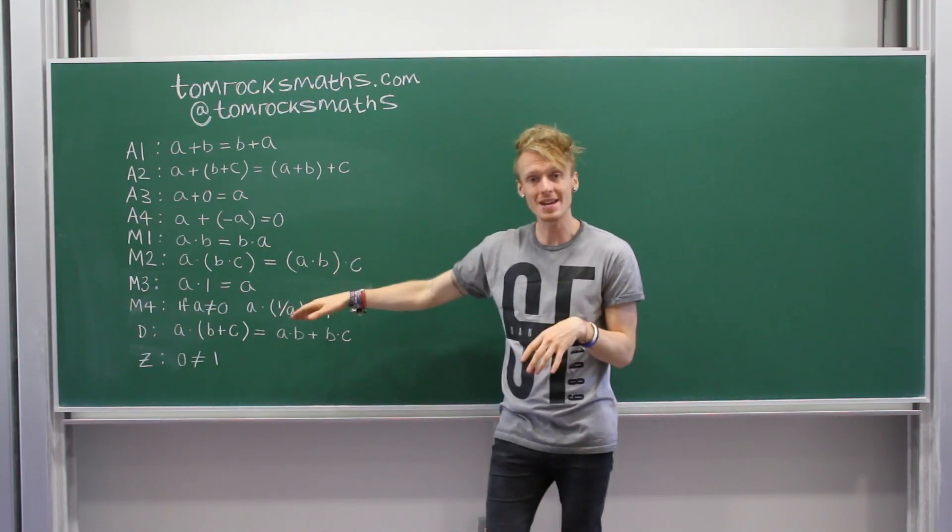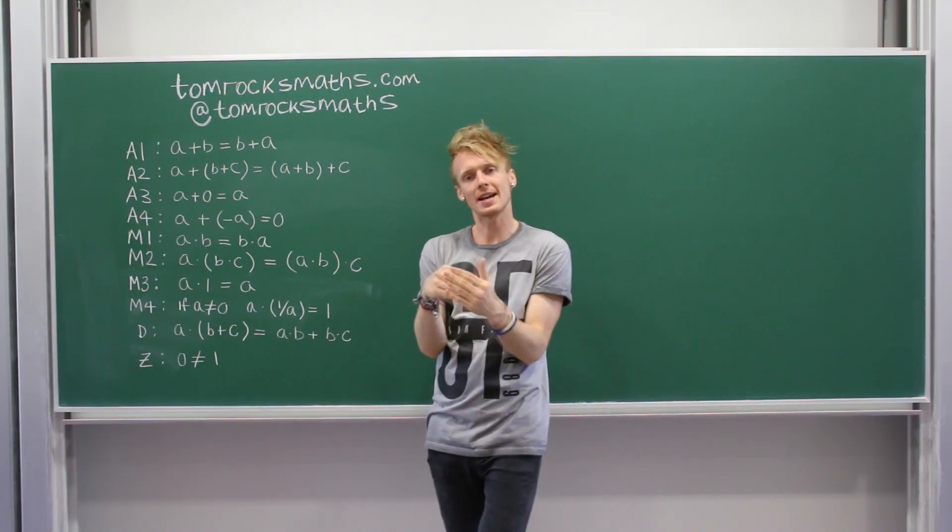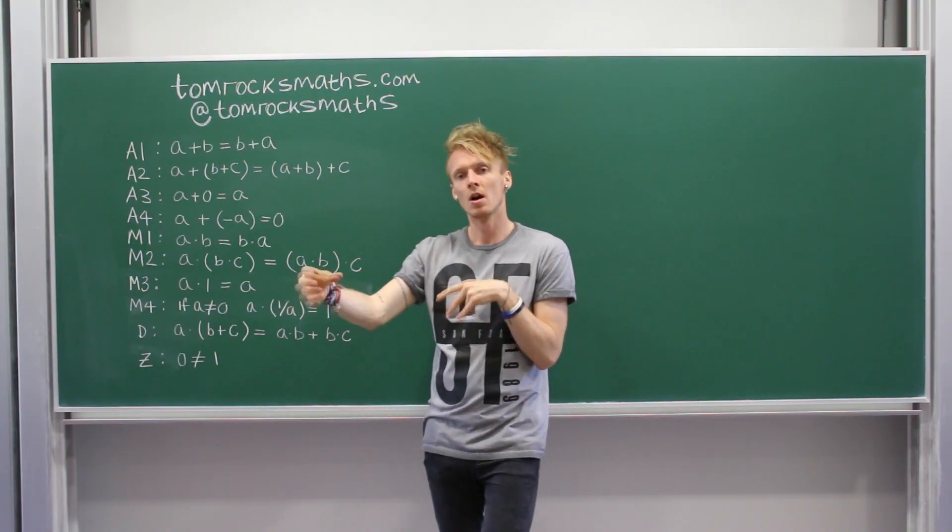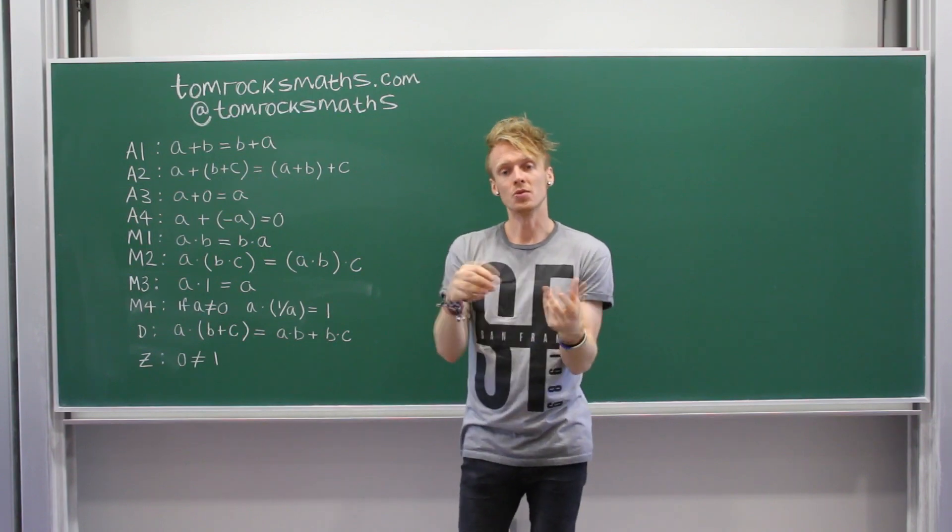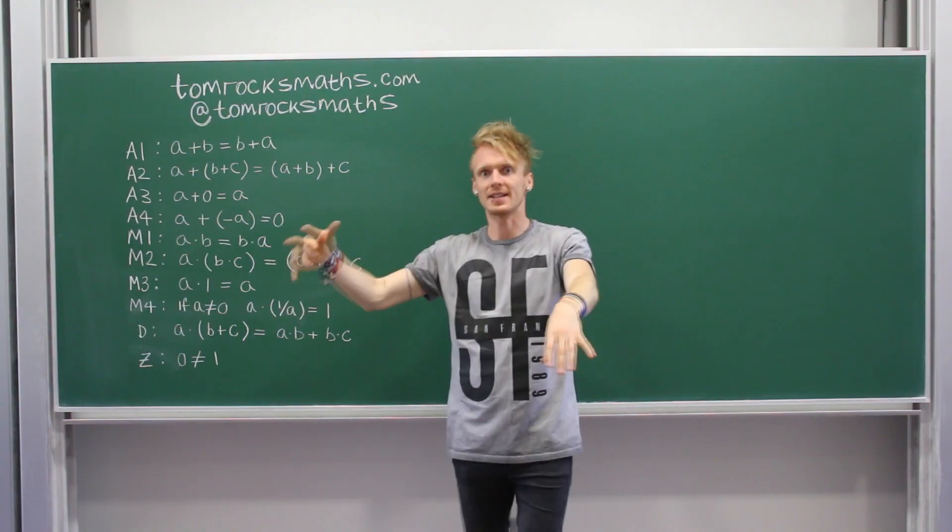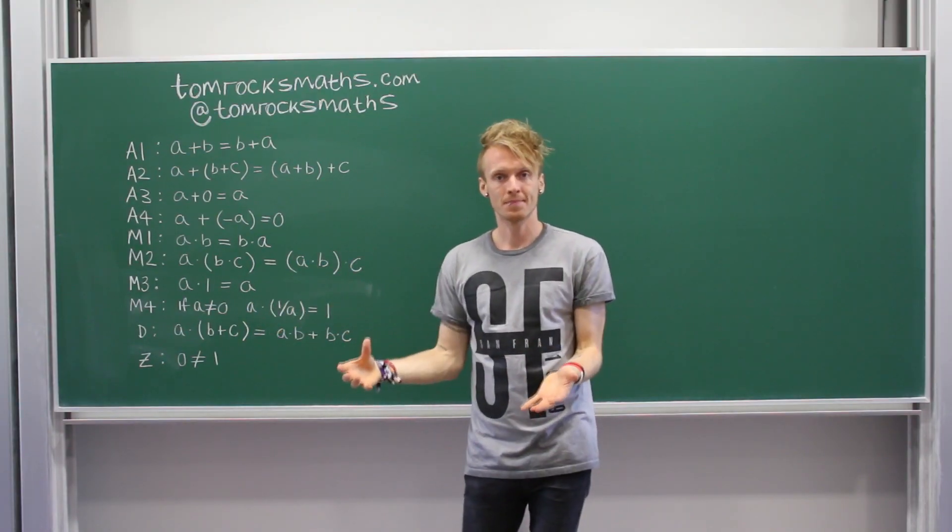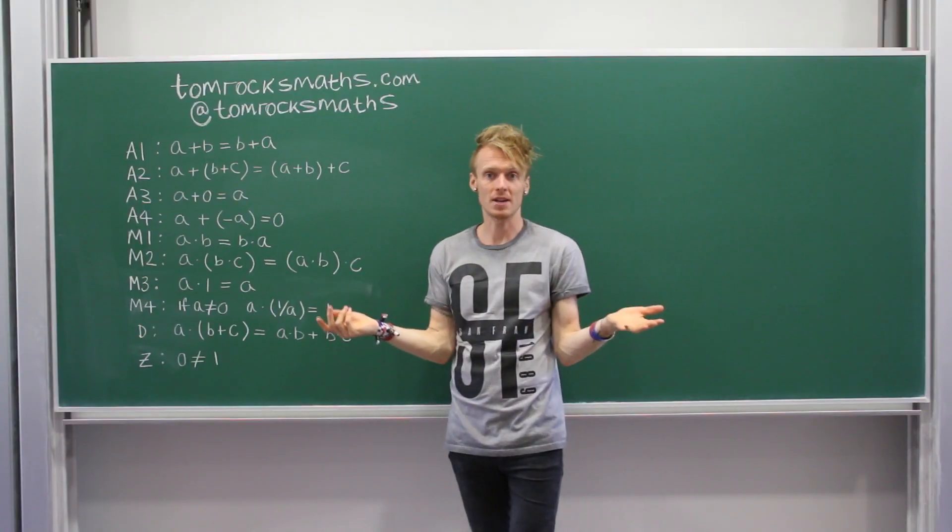For M3, again, similar, we've got identity. So like zero was the identity for addition, for multiplication, you need a number such that when you multiply your starting one by this identity, you get back your starting number. So that has to be one for multiplication.